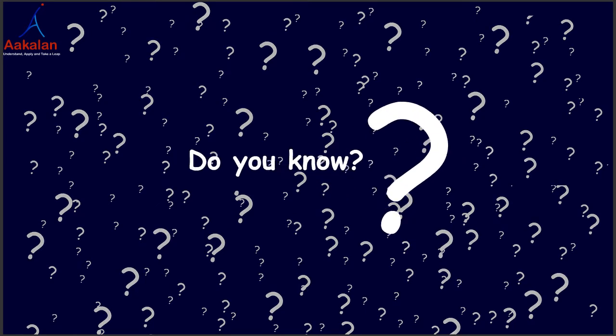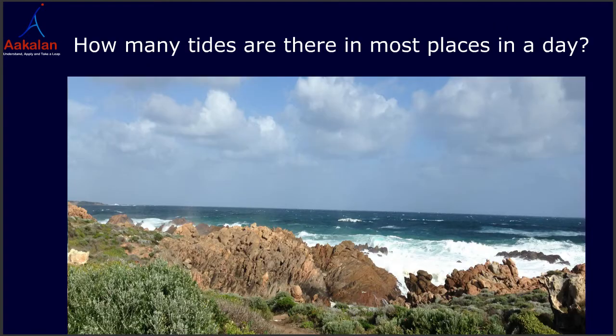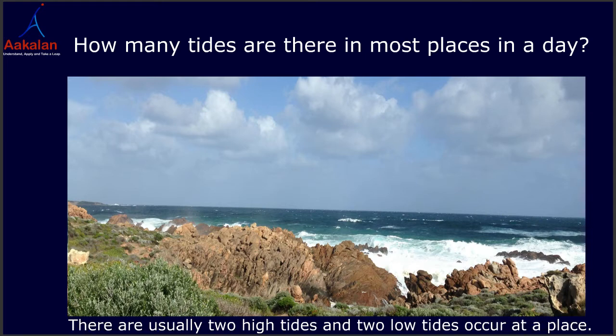Do you know how many tides there are in most places in a day? There are usually two high tides and two low tides that occur at a place. How? Let us see.